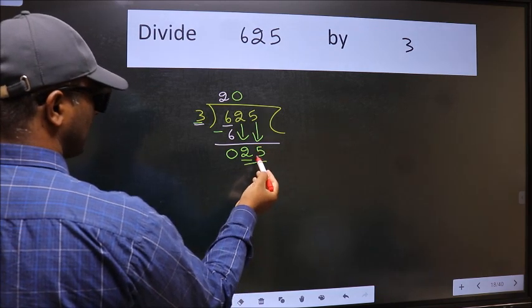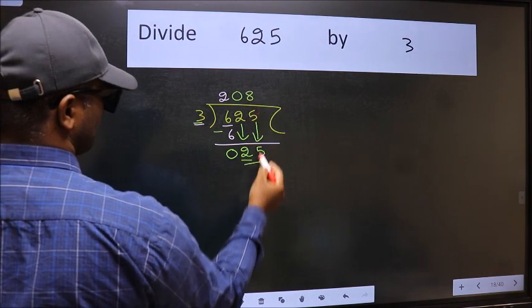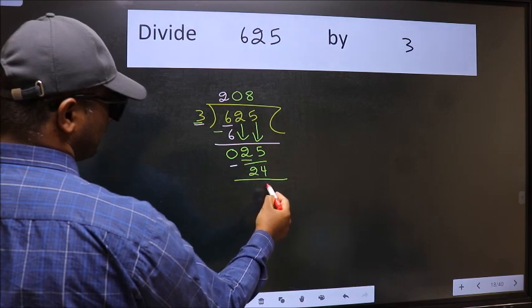Now, 25. A number close to 25 in 3 table is 3 times 8, which is 24. Now we should subtract. We get 1.